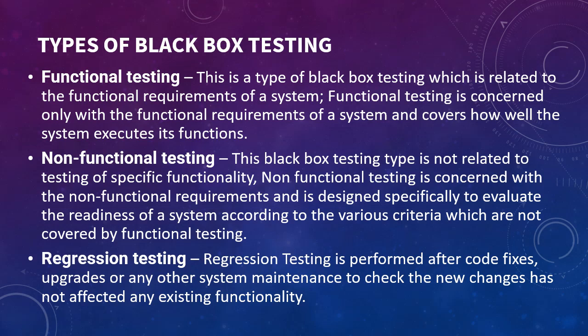There are three types of black box testing. From the next video we're going to see every kind in detail with examples. The first is functional testing — this is a type of black box testing related to the functional requirements of a system. Functional testing is concerned only with the functional requirements and covers how well the system executes its functions.